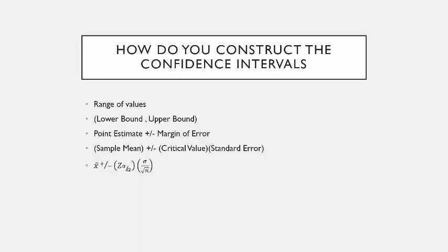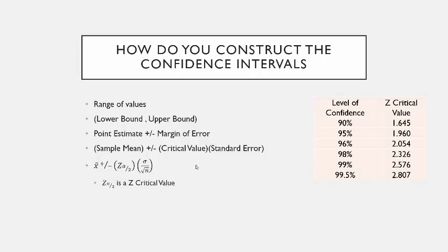The z with the subscripted alpha divided by 2 is called a z-critical value. You can find this using your graphing calculator or the standard normal table. Here's a handy cheat sheet: for a 90% confidence level, the z-critical value is 1.645; for 95% confidence, it's 1.960. The most common levels of confidence are 90%, 95%, and 99%. When you're given the level of confidence, just plug the critical value right into the formula.